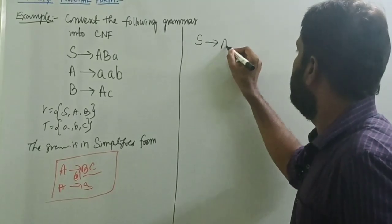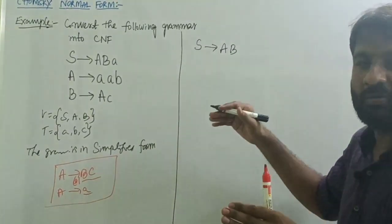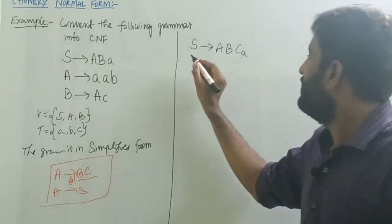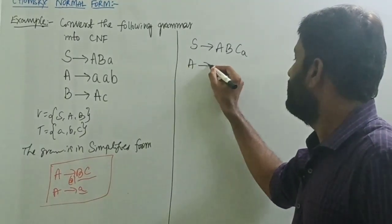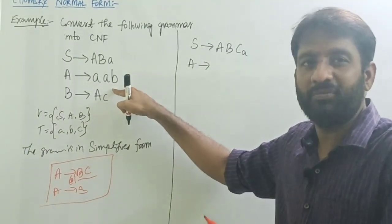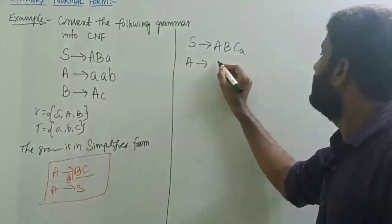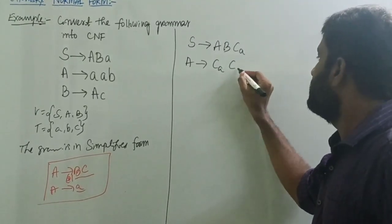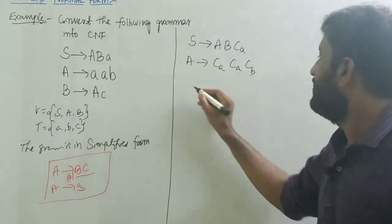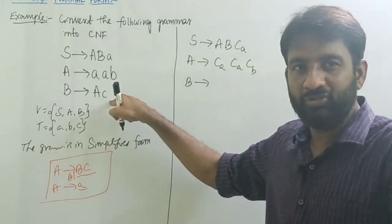S tends to aBAA — this has terminals mixed in, so I am introducing new non-terminals: Ca. A tends to AAB — there are three symbols and terminals not allowed alone, so introduce new non-terminals Ca, Ca, Cb to replace the terminals. B tends to AC — a non-terminal then terminal is not allowed, so introduce one more new non-terminal.